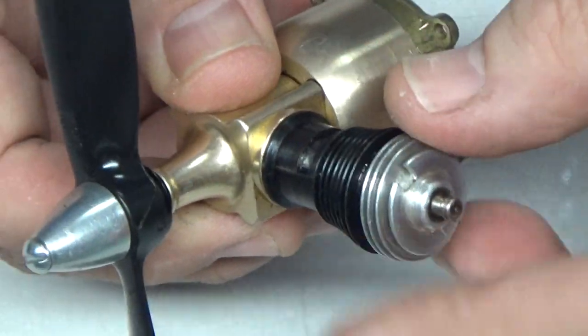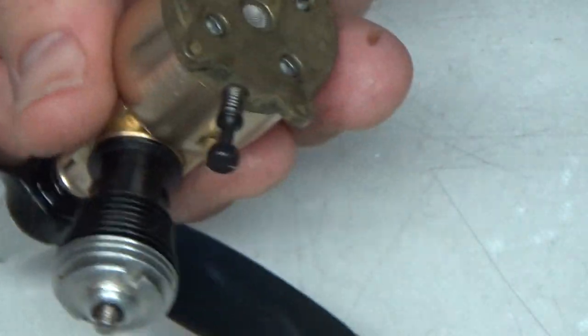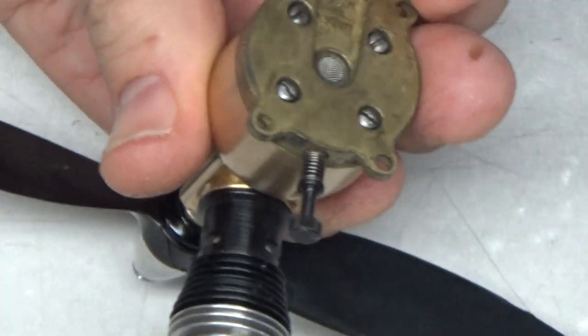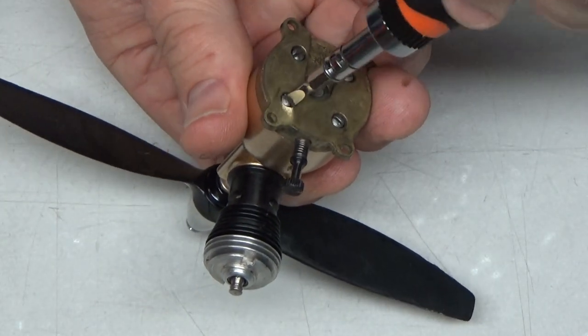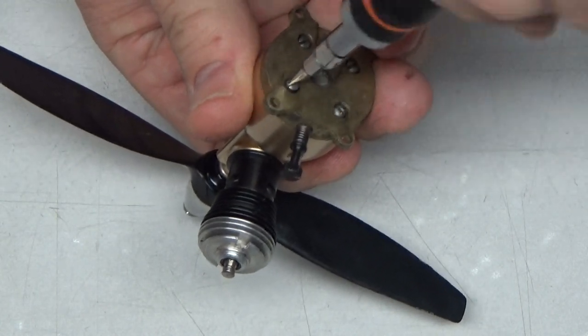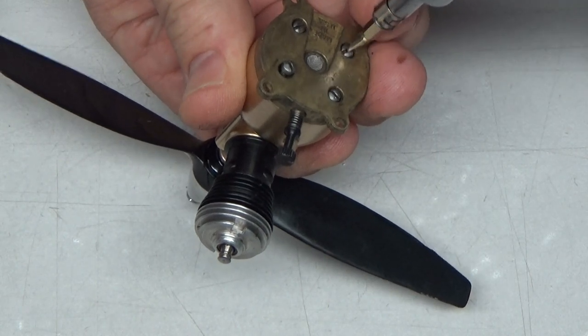The glow head looks fine. So I'm just going to go ahead and kind of quickly thread this back on, and we'll just take this back plate and the fuel tank off real quick and see what the condition of the reed valve and the inside of the tank is.